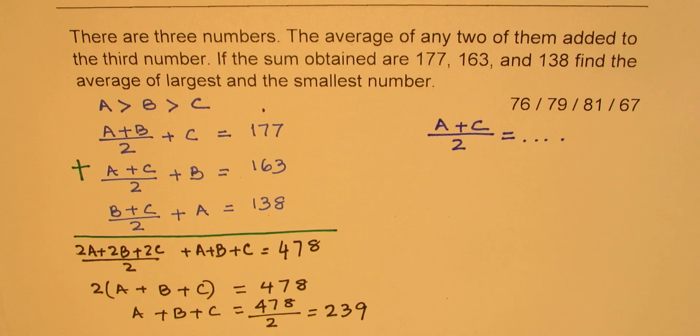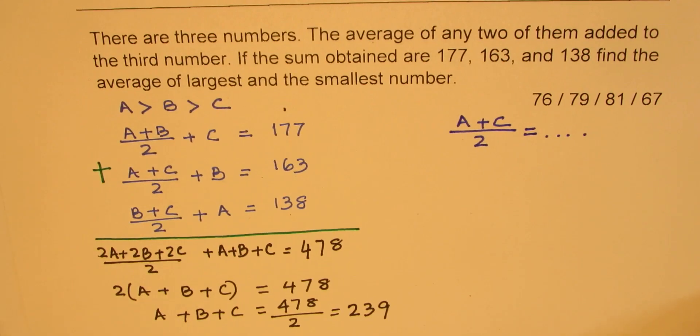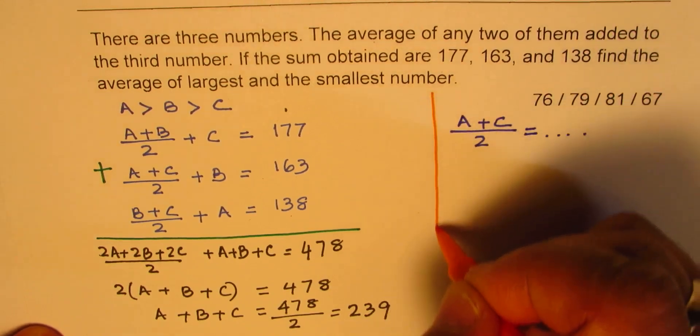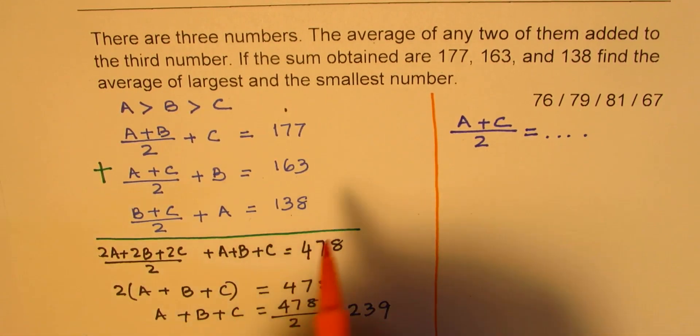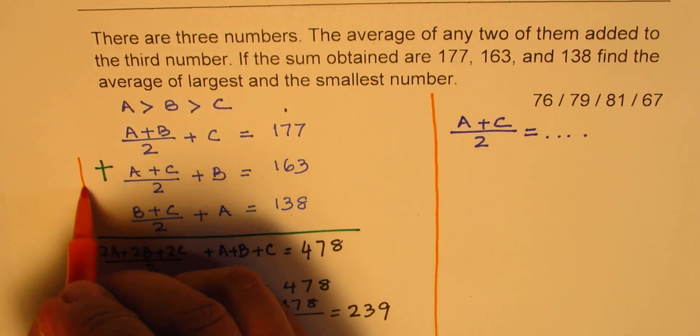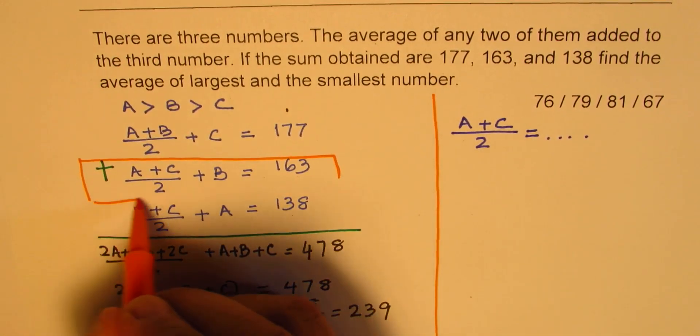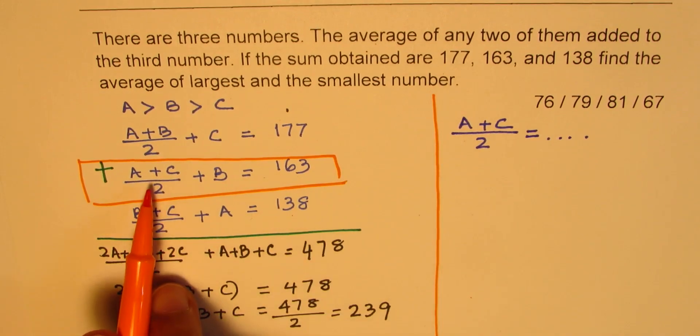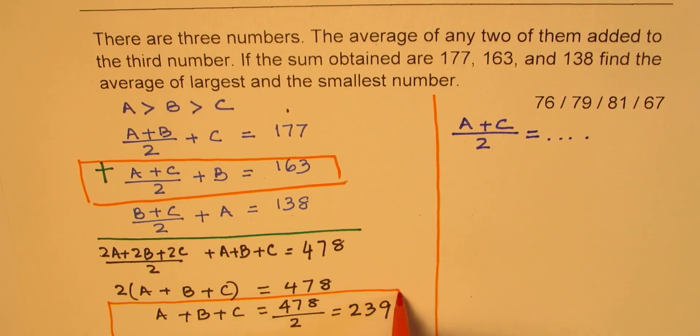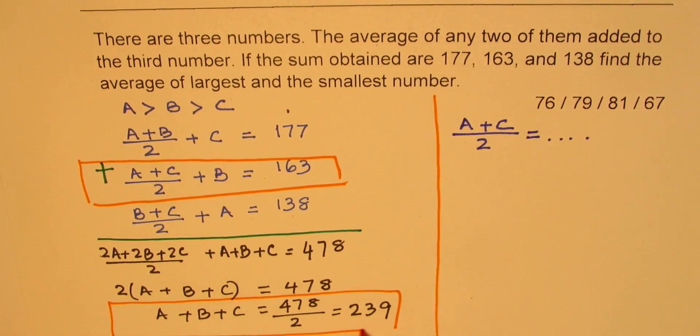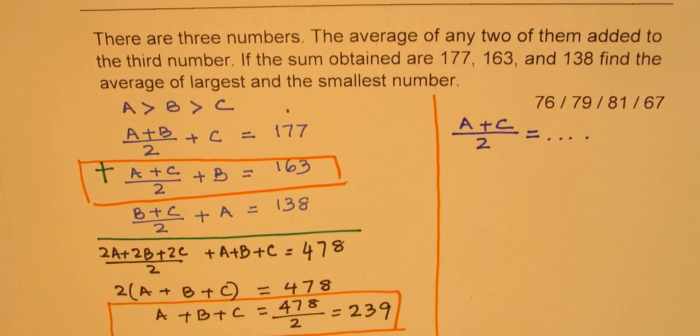Now what do you need to find? We need to find (A+C)/2. Now consider these two equations - since we need to find this element, and what we have here is that the sum of all the three is 239.